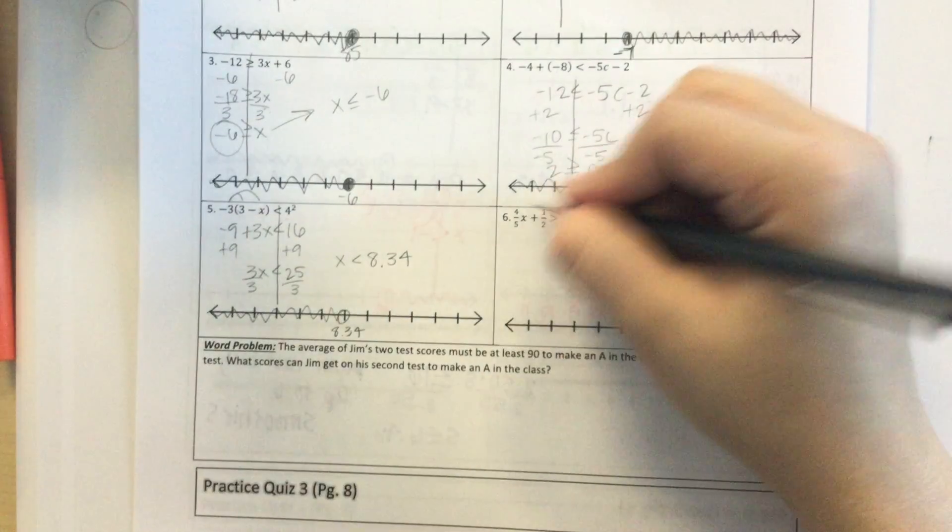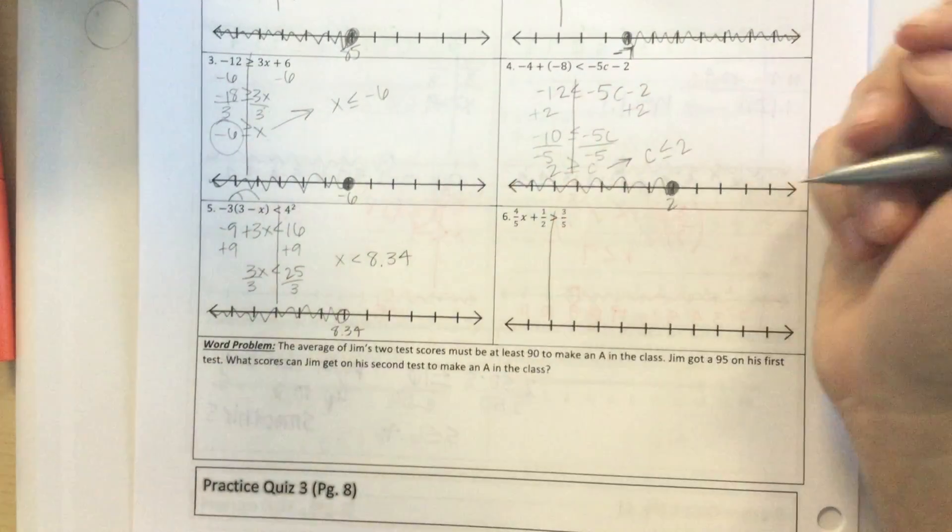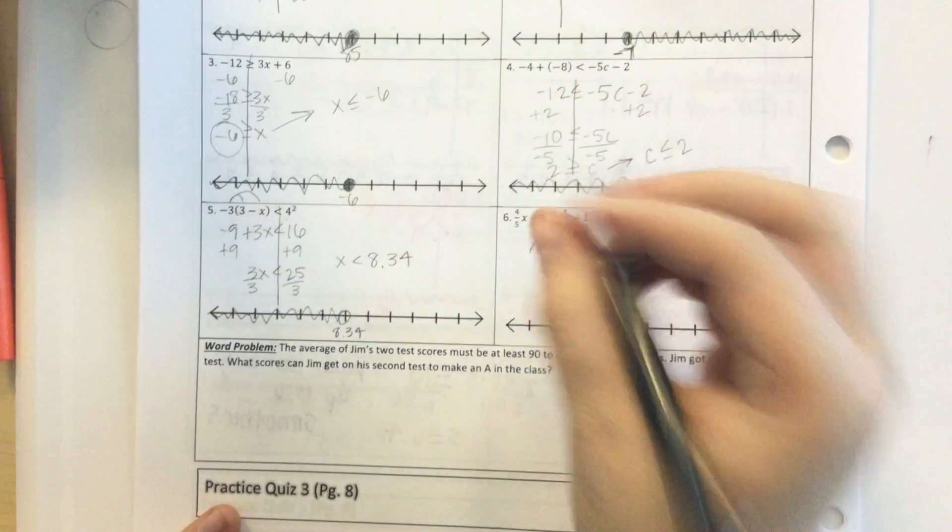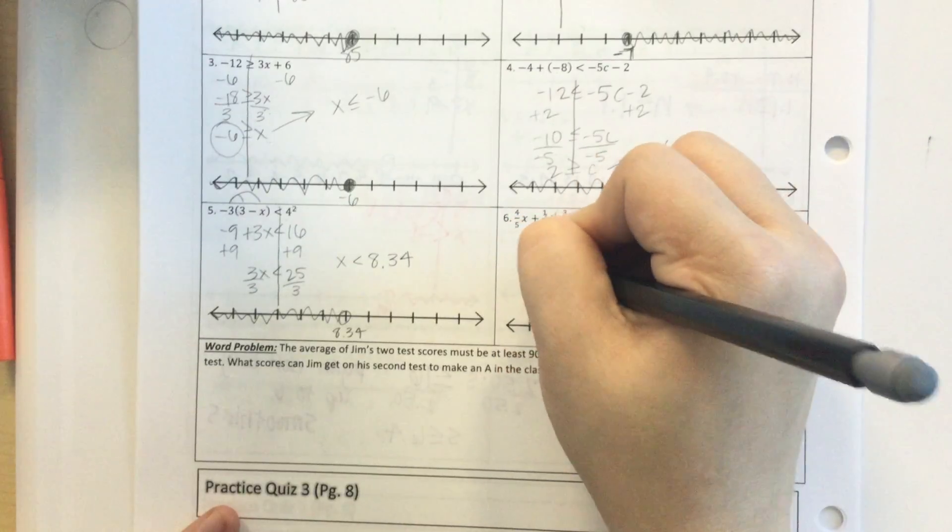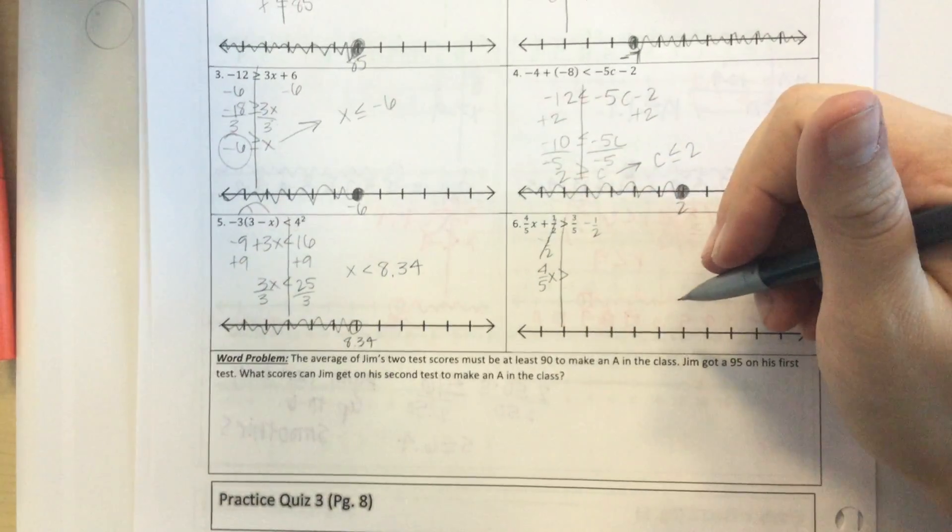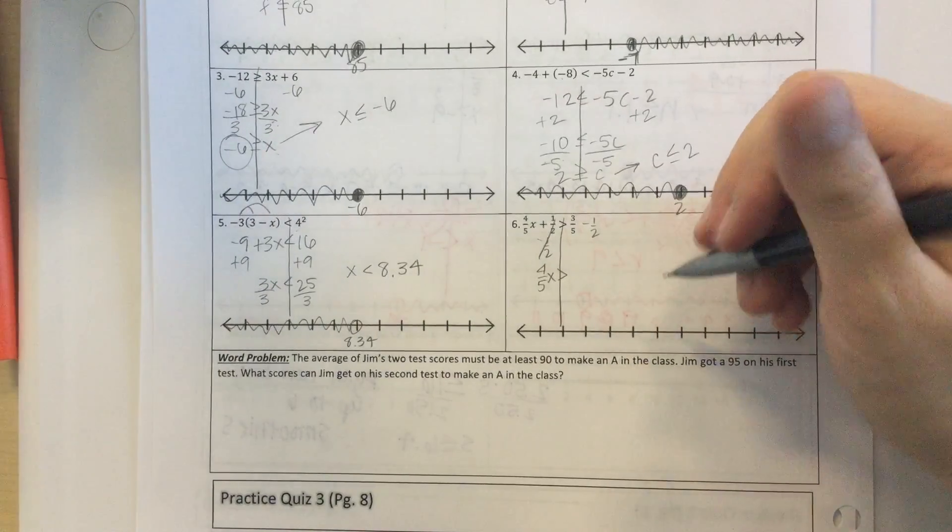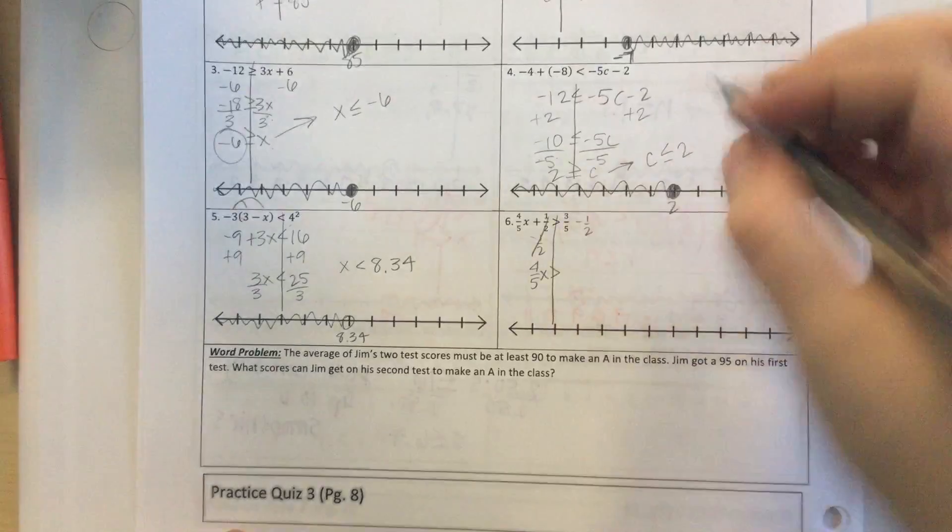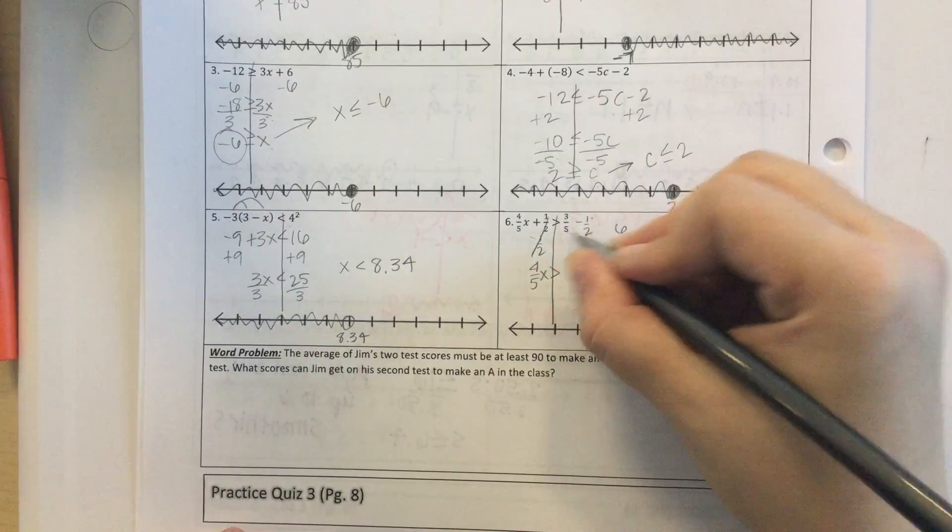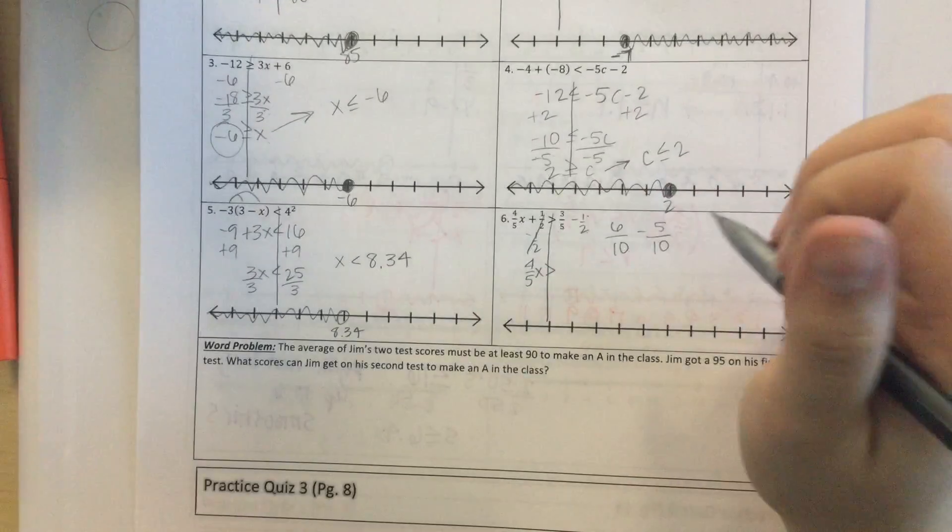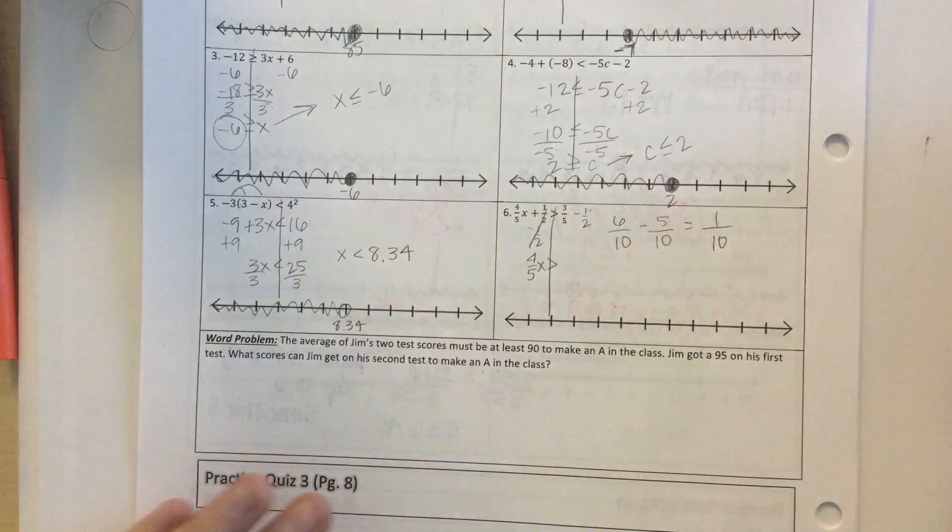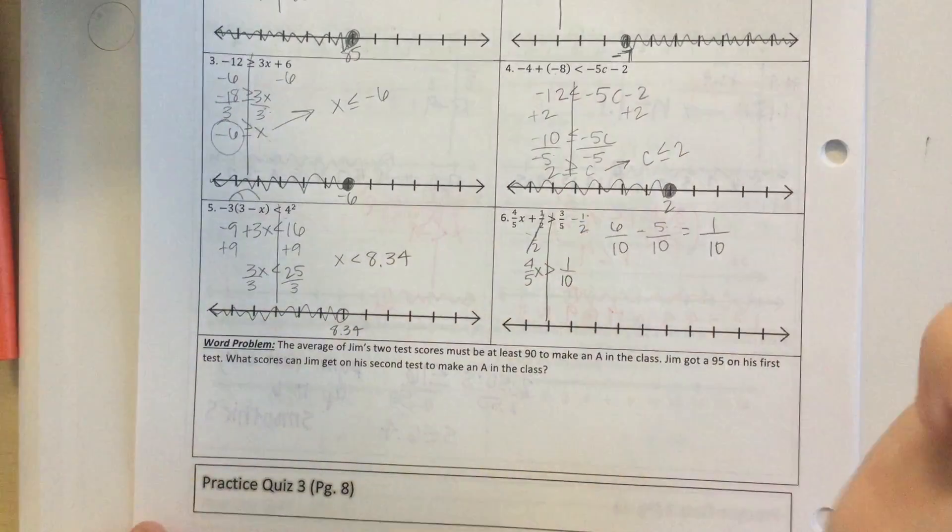Okay. Number 6 has some fractions in it, but that's okay. We like fractions. So I'm going to subtract 1 half. So I get 4 fifths x greater than... Remember when I subtract fractions, I have to have the same denominator. So what that's going to look like is I'm going to go 2 times 3, which is 6. 2 times 5 is 10. 5 times 1 is 5. 5 times 2 is 10. So then I just subtract across. 6 minus 5 is 1 tenth. That's what's left on this side.